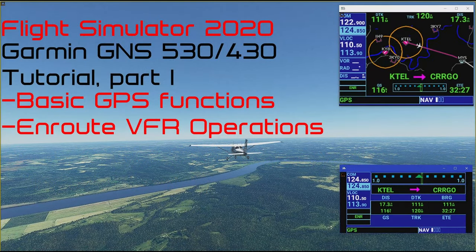The Cessna 172 Classic is equipped with a Garmin GNS 530 and 430. We won't be loading approaches in these units or using any of their advanced features, but we will be using the basic GPS functions plus the nav radios and DME readout. So it's a good idea to have basic familiarity with these units before attempting to fly this approach. Links to videos on all these topics are in this video's description.